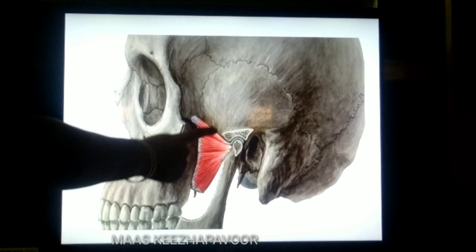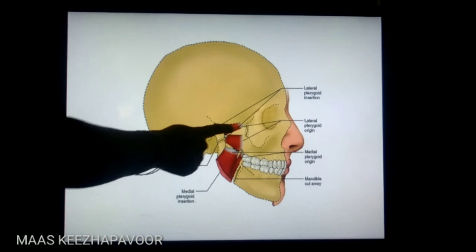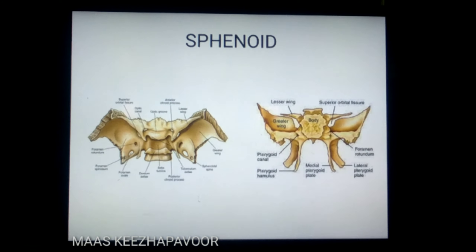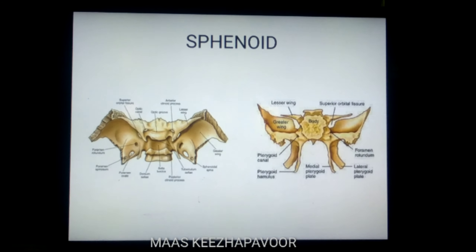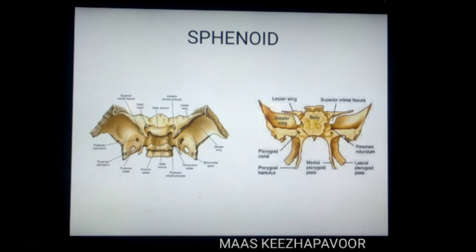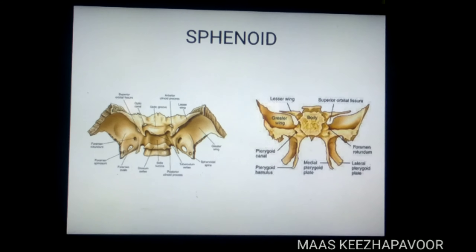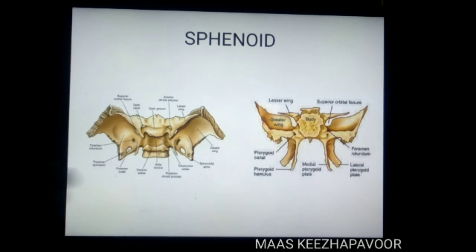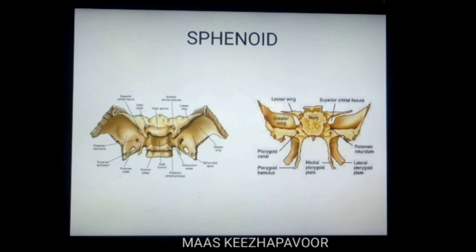Look at the picture. This is the lateral pterygoid muscle. In this picture you can appreciate both the lateral pterygoid muscle and the medial pterygoid muscle. Before learning any muscle you should know the bones related to its origin and insertion. The lateral pterygoid muscle arises from the sphenoid bone, so we should recollect the sphenoid bone. The same muscle is getting inserted to the ramus of mandible. We should recollect the ramus of mandible also. Here you observe the lateral pterygoid plate — it has got a lateral surface and a medial surface. When you trace it straight up you get the infratemporal surface of the greater wing of sphenoid.